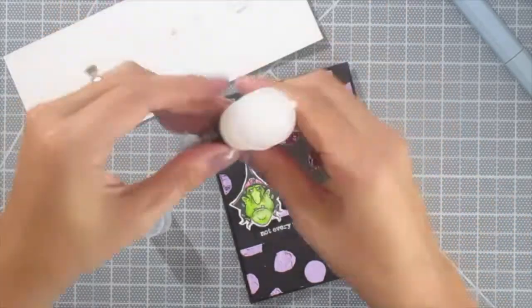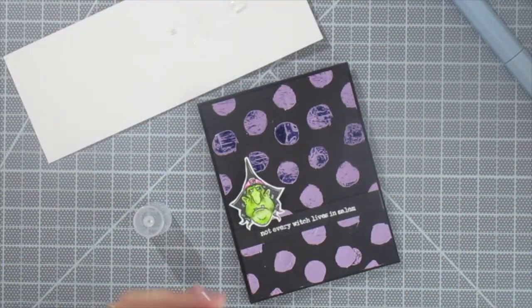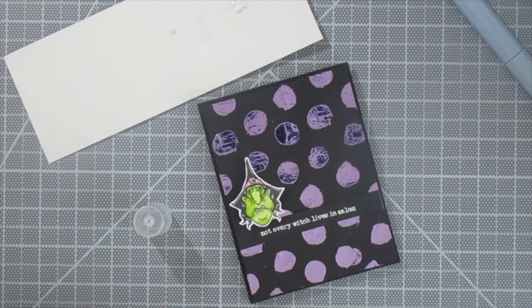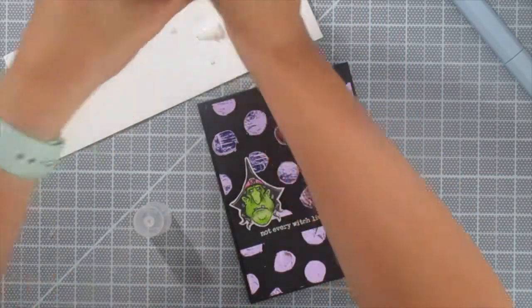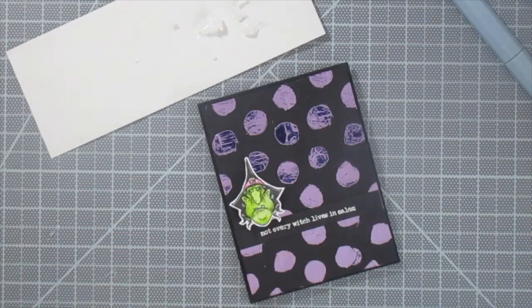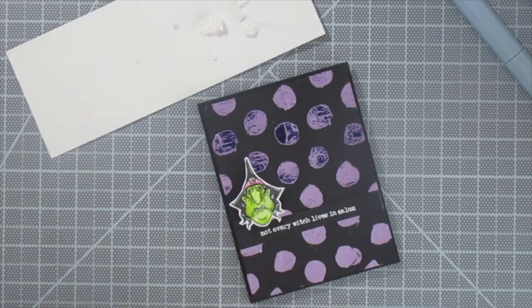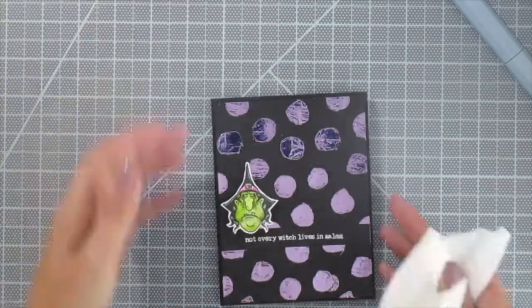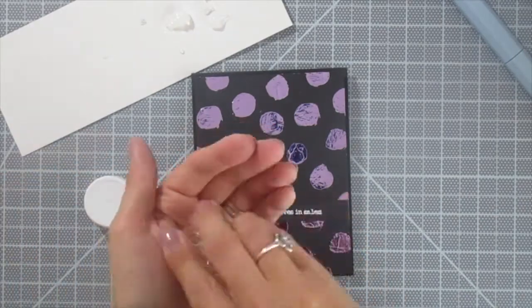And then last but not least, I'm going to add some glass beads. And I'm just using my Decofoil liquid adhesive. This stuff is great. It dries clear. It works super well. You can see I squeezed a bunch of it out there. I love it. It's so perfect for sequins.